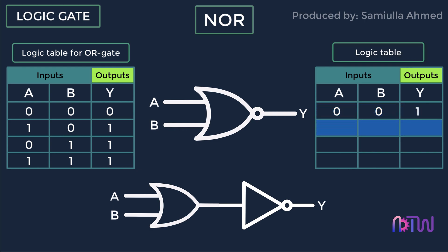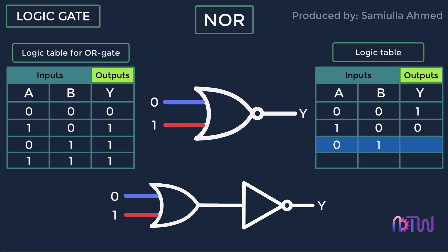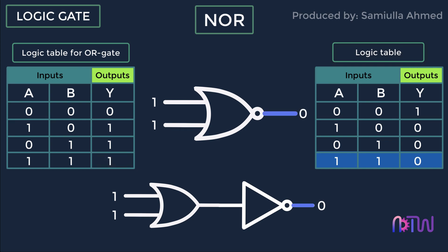The second set of inputs: A equals one and B equals zero. The OR gate output is one, then passing through the NOT gate gives a final output of zero. The next set: A equals zero and B equals one — OR gate output is one, after passing through the NOT gate the final output is zero. The final set: A equals one and B equals one — OR gate output is one, after passing through the NOT gate the final output is zero. In short, the output of the NOR gate is opposite to the output of the OR gate.